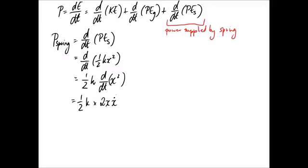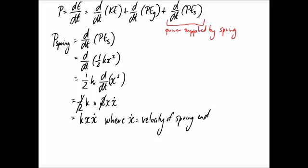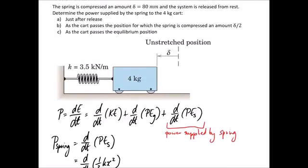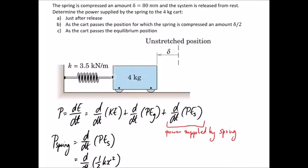From there, we can do a bit of cancelling. So the half is going to cancel with the 2. And we find that the power delivered by the spring is equal to k, the spring constant, x, the displacement, and x dot. And thinking about it in terms of the question, x dot is going to be the velocity of the spring end.